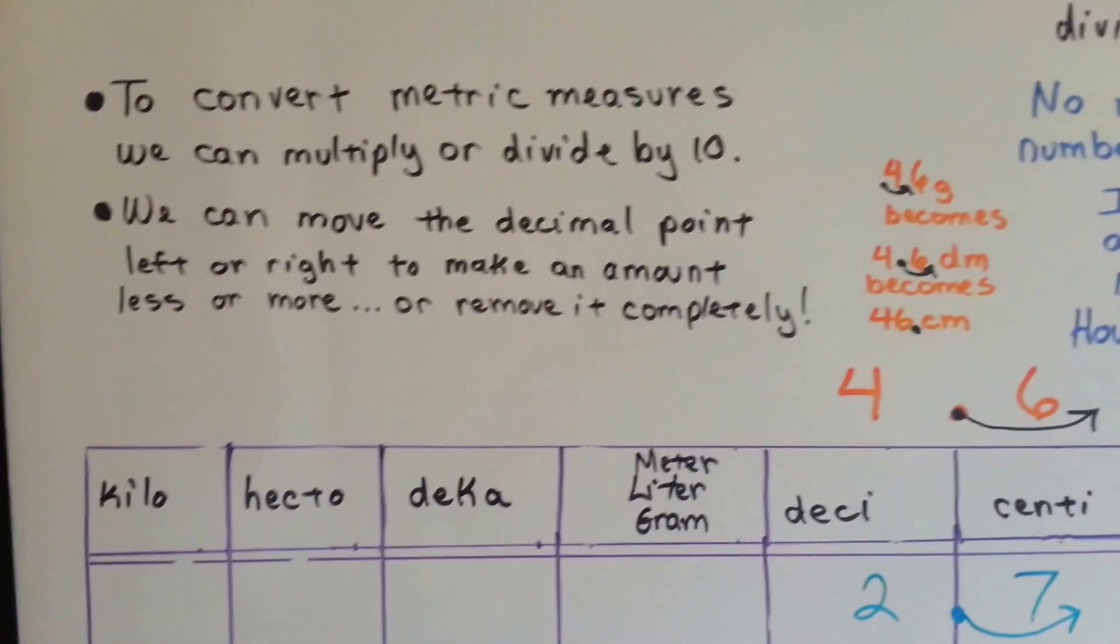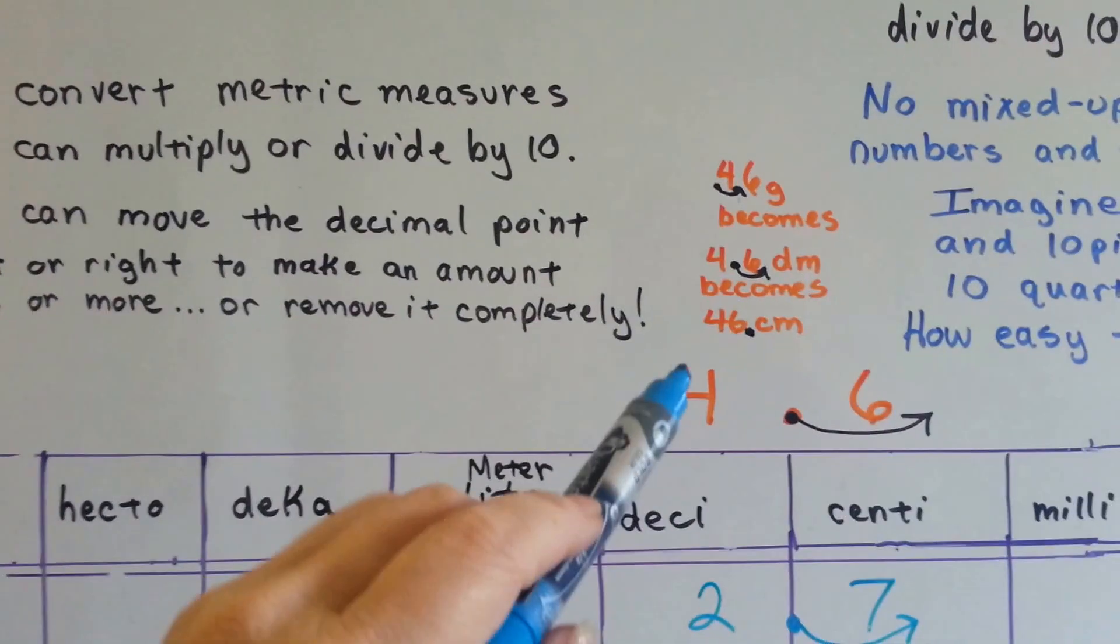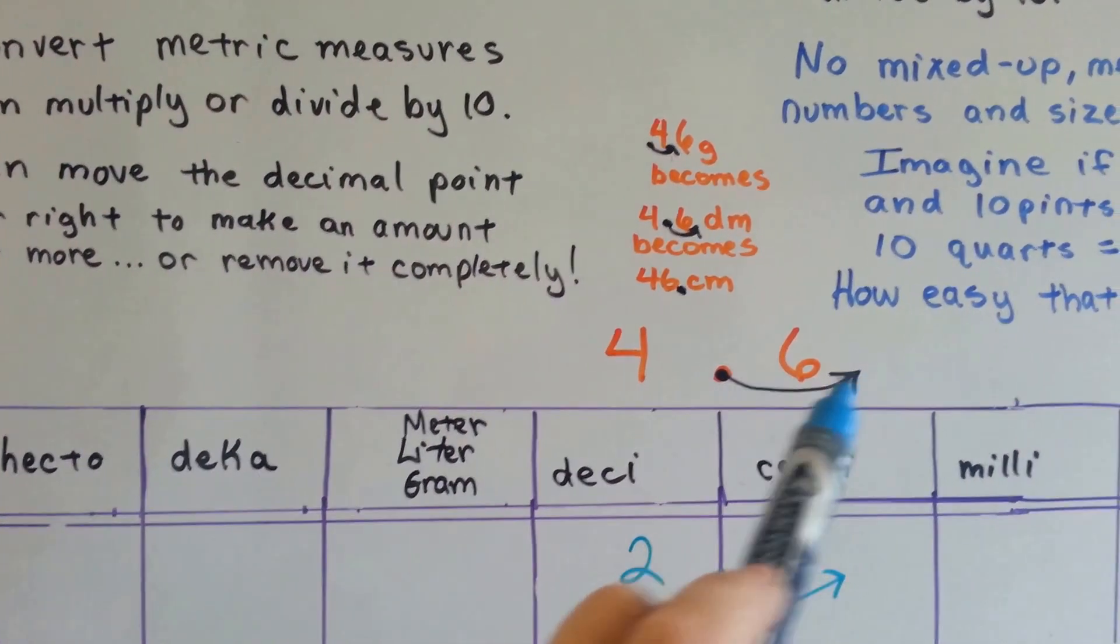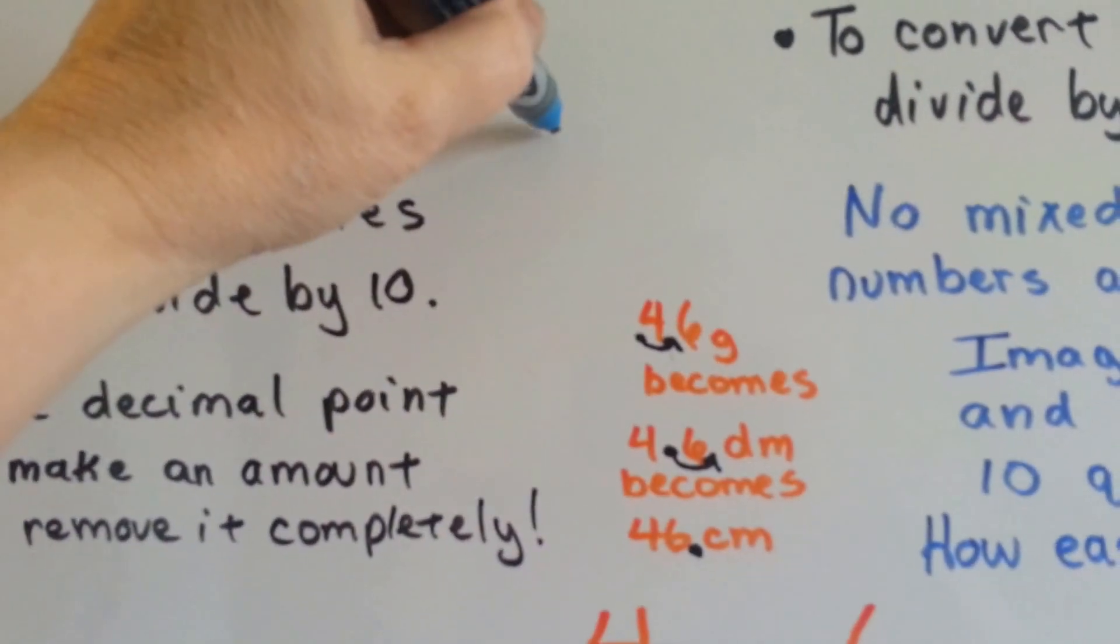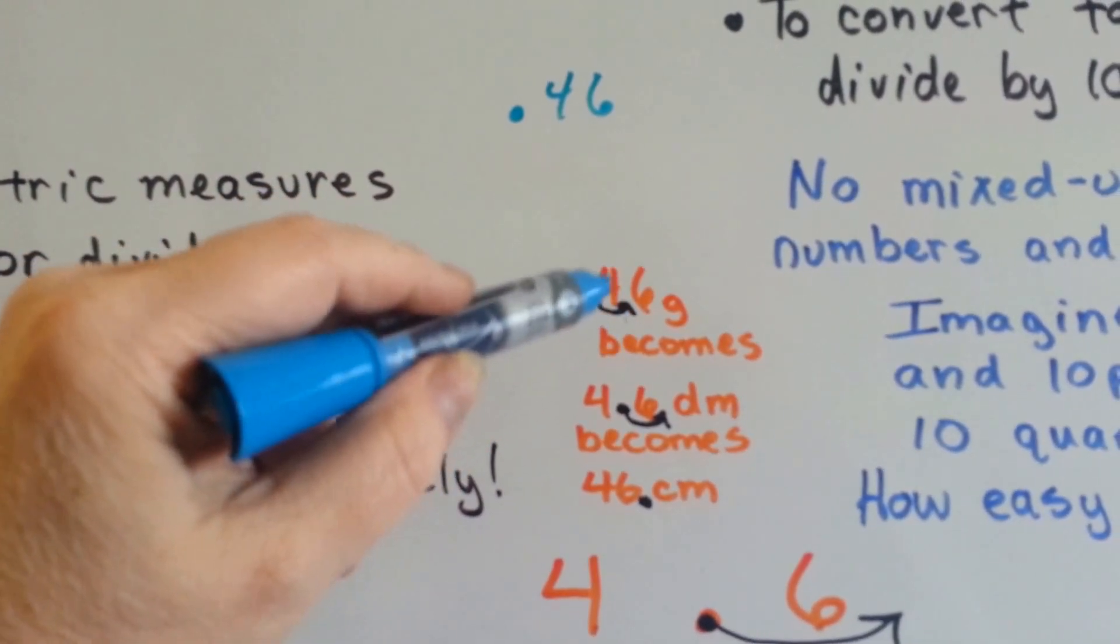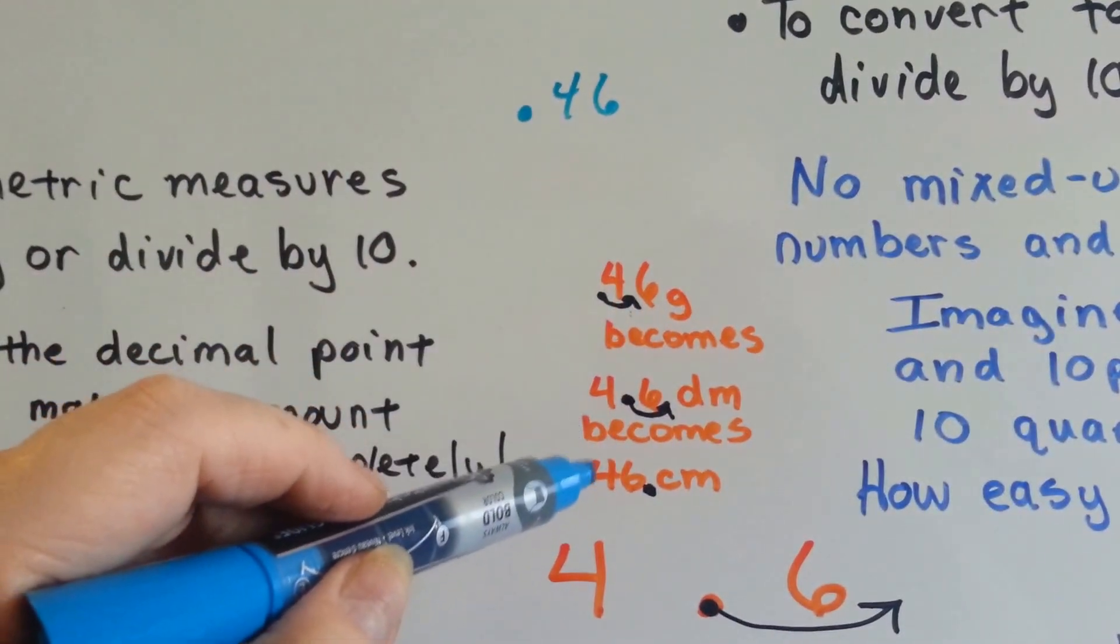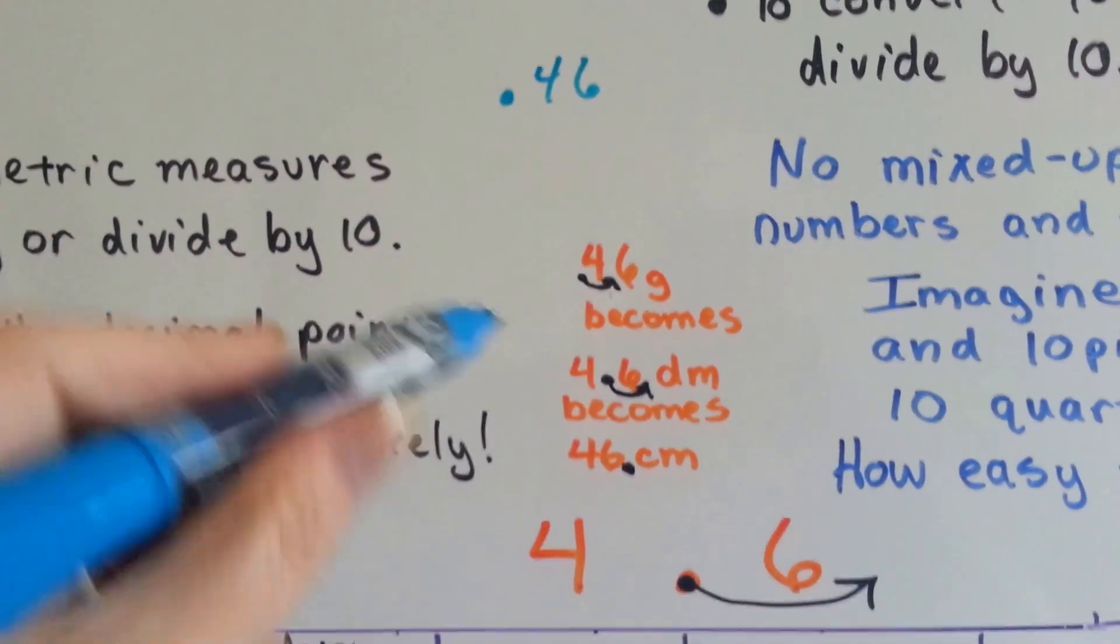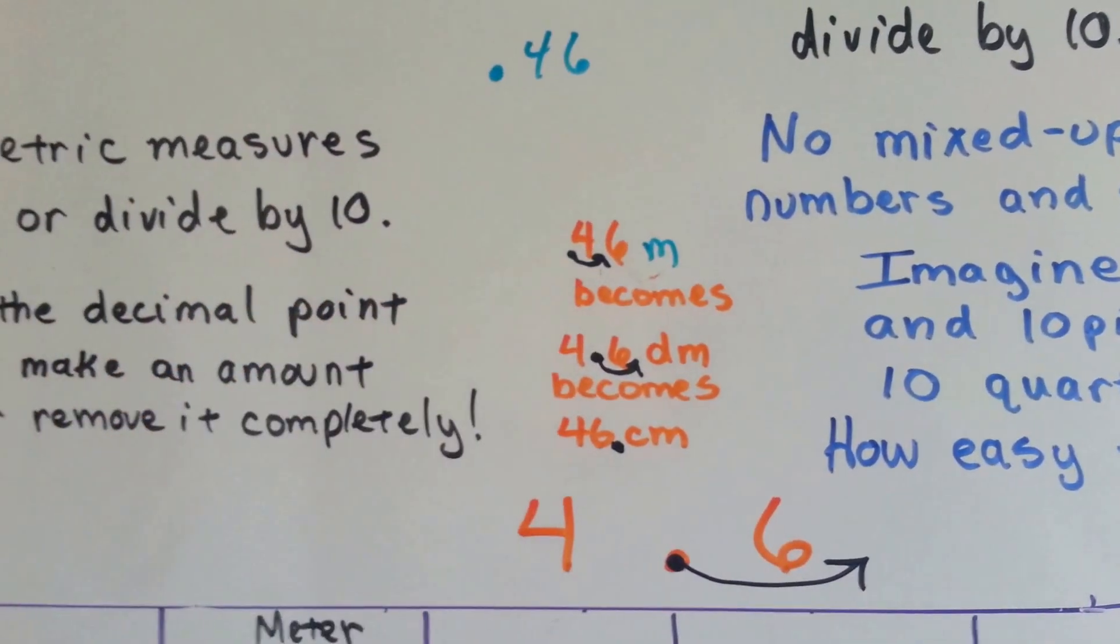Now, to convert metric measures, we can multiply or divide by ten. Look at this 4.6 we've got here. This would be 4.6 decimeters. But if we moved this decimal point to the right side of the 6, it would become 46 centimeters. We could actually change the value by moving the decimal point. 0.46 grams can become 4.6 decigrams. If we put the decimal place behind the 6, it becomes centimeters. If we put it in between the 4 and 6, it's a decimeter. And if we put it in front of the 4, it becomes meters, 46 hundredths of a meter.